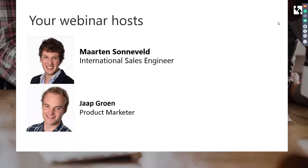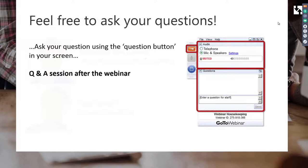Hello, good afternoon. Today we'd like to introduce our new app, the MEP Content PLIP for piping. This is a Revit app, and this webinar will explain to you how it works. If you have any questions, please feel free to use the question panel in the GoToWebinar menu. We'll try to answer them during the webinar, or in a Q&A session afterwards.